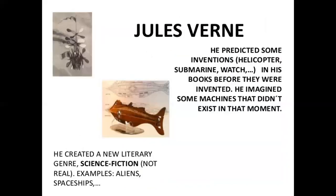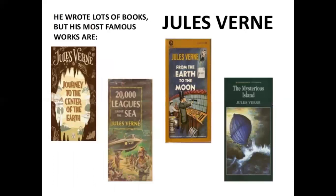He wrote lots of books but his famous works are: Journey to the Centre of the Earth, 20,000 Leagues Under the Sea, From the Earth to the Moon, and The Mysterious Island. Can you see the pictures? All are related to science and are adventurous. Science fiction is something related to science, and fiction is something which is written from the imagination.